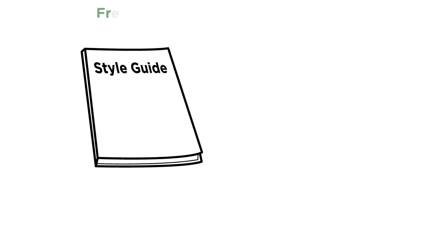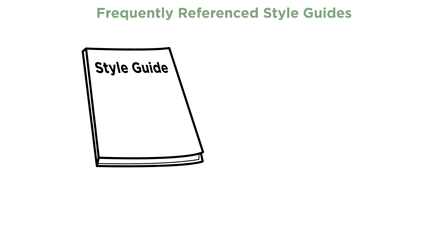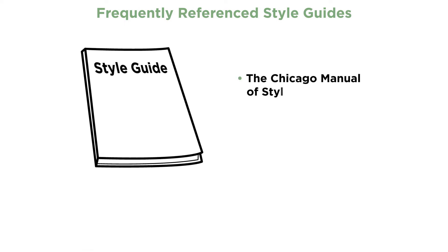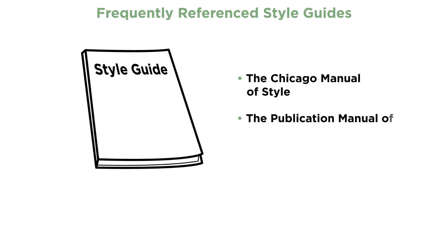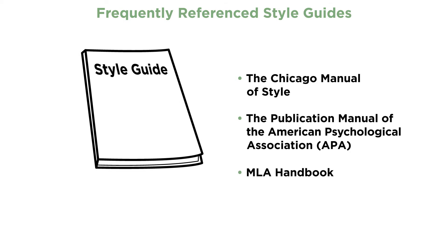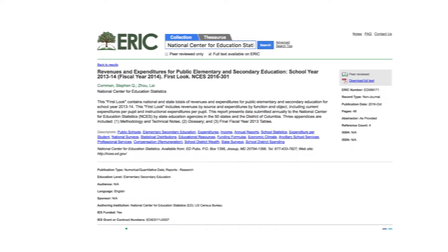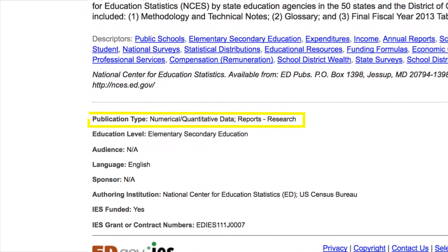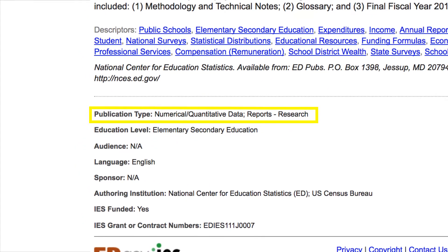First, consult your chosen style guide or manual. The most frequently referenced guides in the field of education include the Chicago Manual of Style, the Publication Manual of the American Psychological Association known as APA style, and MLA Handbook from the Modern Language Association. You should start by identifying the type of material you are citing since many style guides base reference formats on material type. If you are unsure, check the publication type field to see how the ERIC record describes the material.